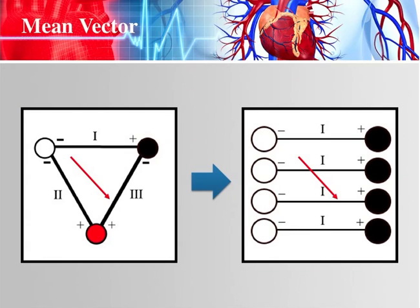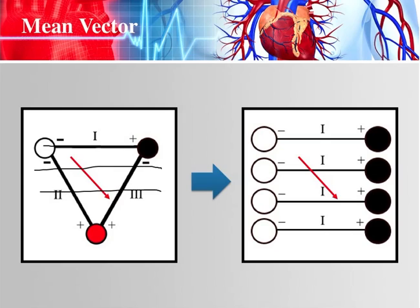Using Eindhoven's triangle with the mean vector superimposed, we know why we look at Lead II — because the wave of depolarization is normally going in the direction of Lead II's positive electrode. We also look at Lead I, which should be upright because the vector is moving more towards Lead I's positive electrode. In electrocardiography, two leads are equal as long as they are parallel.